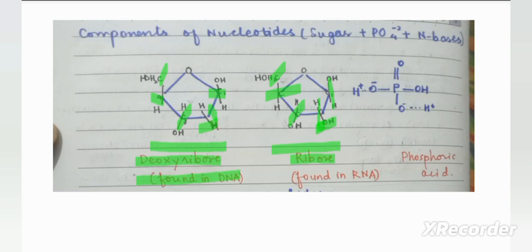The next component is the phosphate group, or phosphoric acid. Nucleotides are composed of pentose sugar, nitrogenous bases, and phosphate group. Phosphoric acid is acidic in nature because oxygen atoms lose protons and gain a negative charge. Because of this negative charge from the phosphoric acid, both DNA and RNA carry a negative charge.